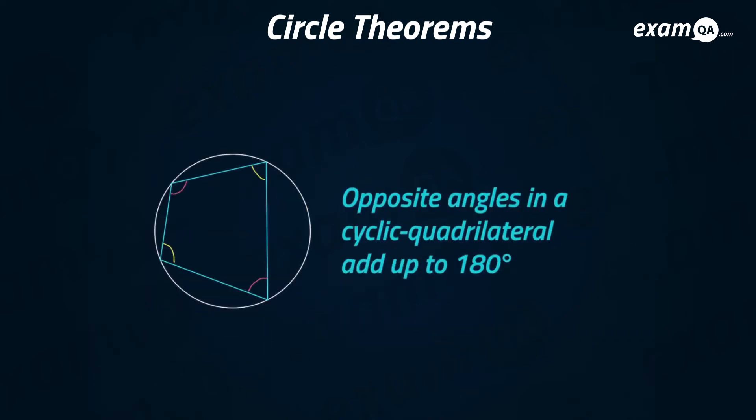Opposite angles in a cyclic quadrilateral add up to 180 degrees. So what that means is if this angle was 60 degrees, this opposite angle has to be 120 degrees because 60 and 120 add up to 180. And if this was 100 degrees, this one would have to be 80 degrees.